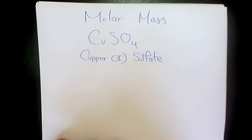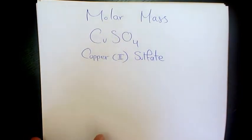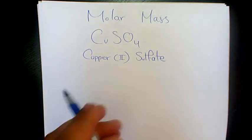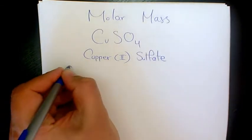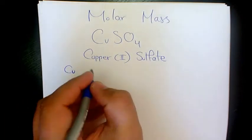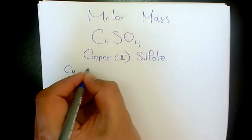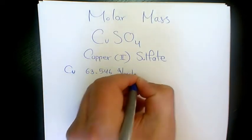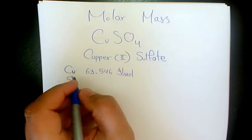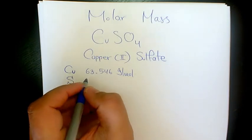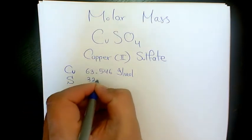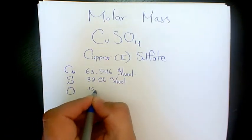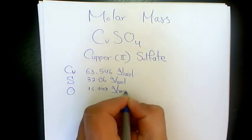So in order to find out the molar mass of Copper Sulfate, we need to use the periodic table to find out the atomic mass of each element or each atom in this compound. Copper is a transition metal, 63.546 grams per mole. Sulfur is 32.06 grams per mole. And Oxygen is 15.999 grams per mole.